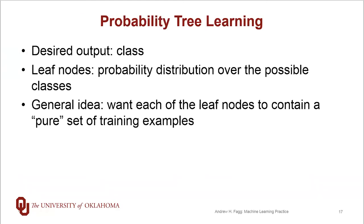Now for probability tree learning, our desired output in our training set is our class label. The leaf nodes are probability distributions over the possible classes. The general idea is that we want to end up with a tree such that each of the leaf nodes contains a pure set of examples. And what I mean by that, we're dealing with a binary tree which is classifying positive from negative. We want leaves that contain all positives or all negatives, but we want to minimize the scenario where there are especially equal numbers of positives and negatives.